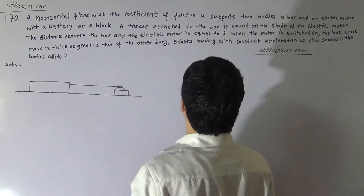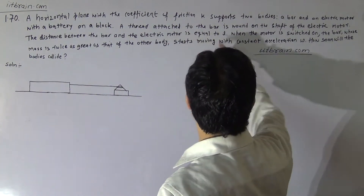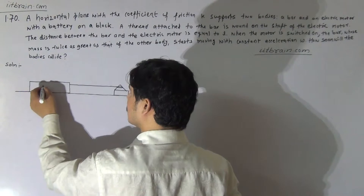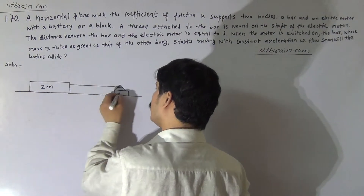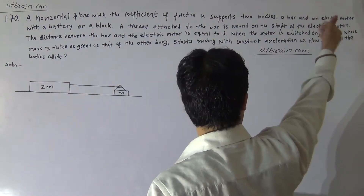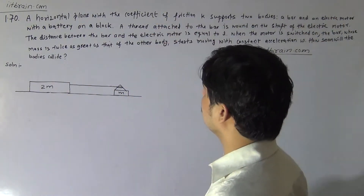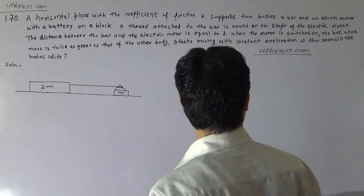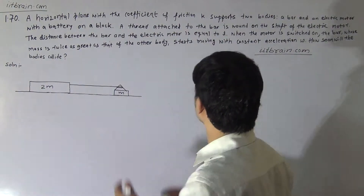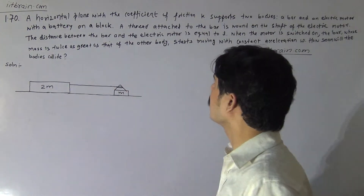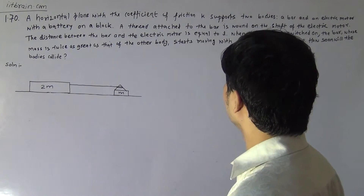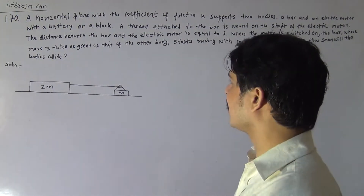In the winding of the motor, it is given that a thread attached to the bar is wound on the shaft of the electrical motor. The motor is placed on the block whose mass is twice as great as that of the other body. They start moving with constant acceleration w. A horizontal plane with coefficient of friction k supports two bodies: a bar and an electrical motor with a battery on the block. A thread attached to the bar is wound on the shaft of the electrical motor.